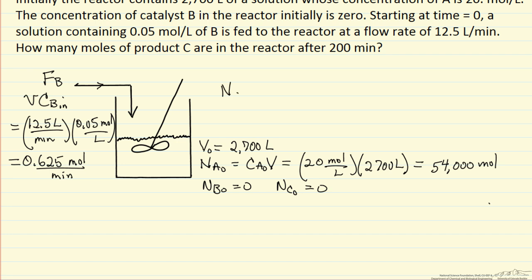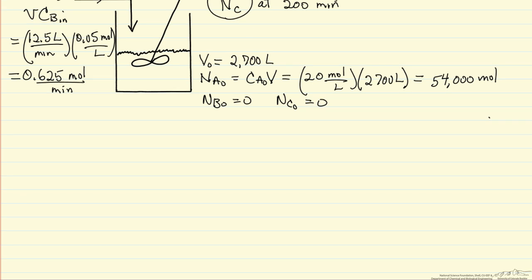What we're trying to determine is Nc at 200 minutes. This is our unknown that we're solving for. What we want to do is write down mass balances for the system, and we're going to solve this numerically. That's the easiest way, and it's a more general way to solve this type problem.